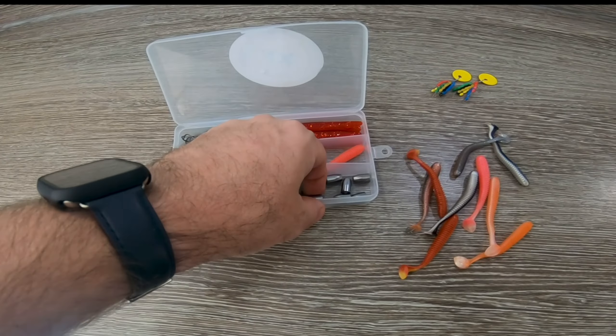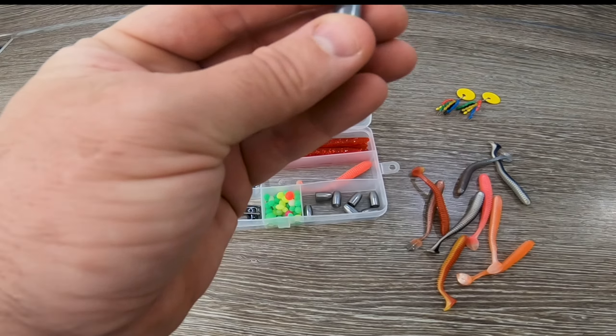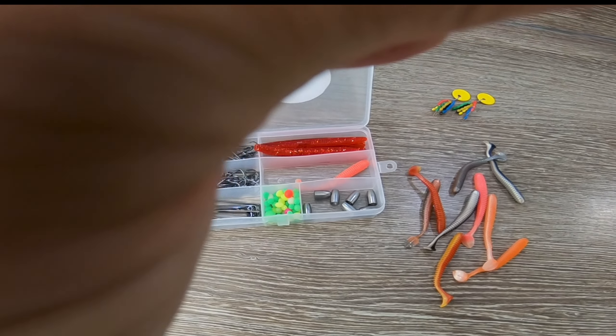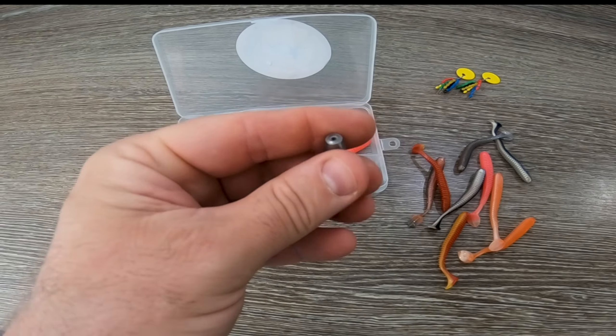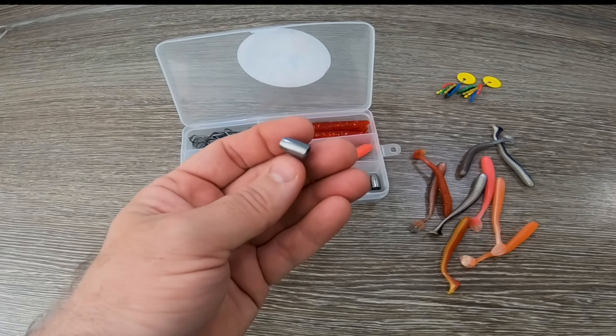And then you've got some weights. You get 8 of these little weights. Check down that line, make sure they're alright. 8 of them little weights and they are 3.5 grams.